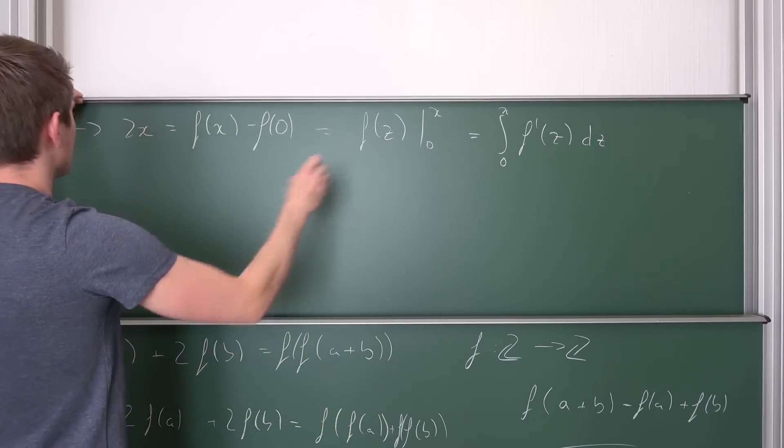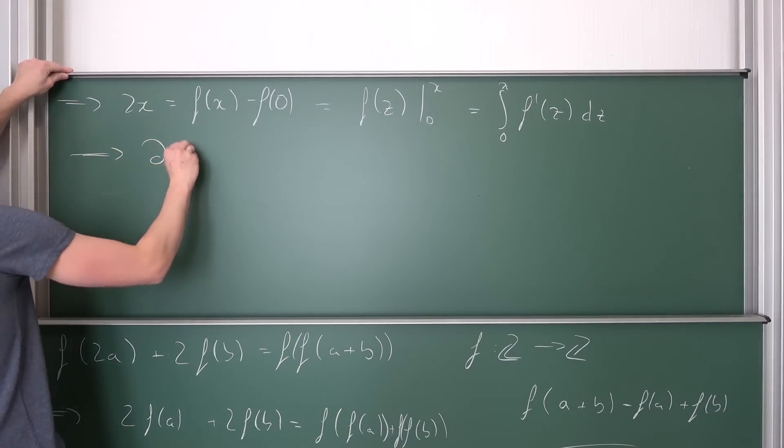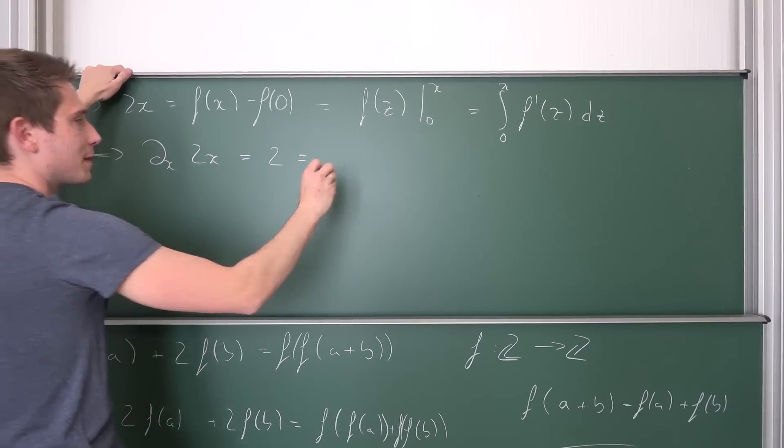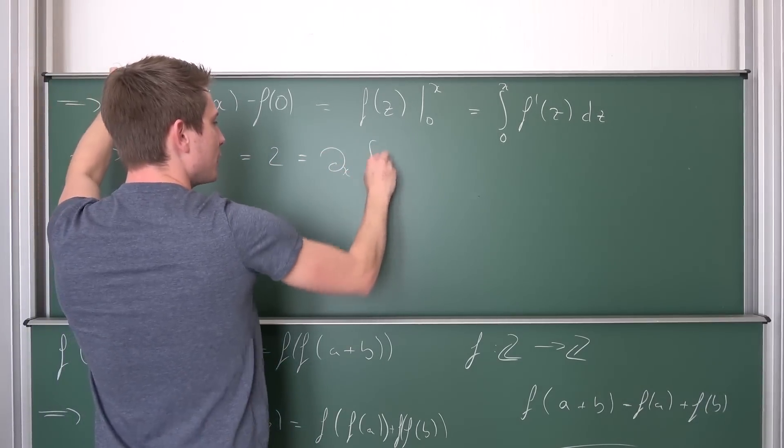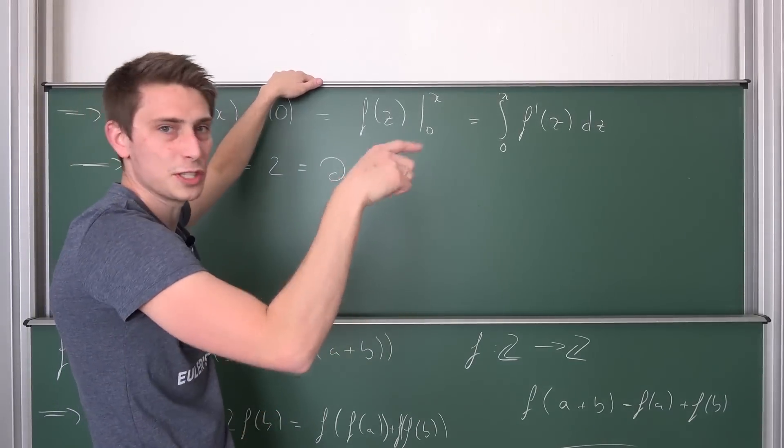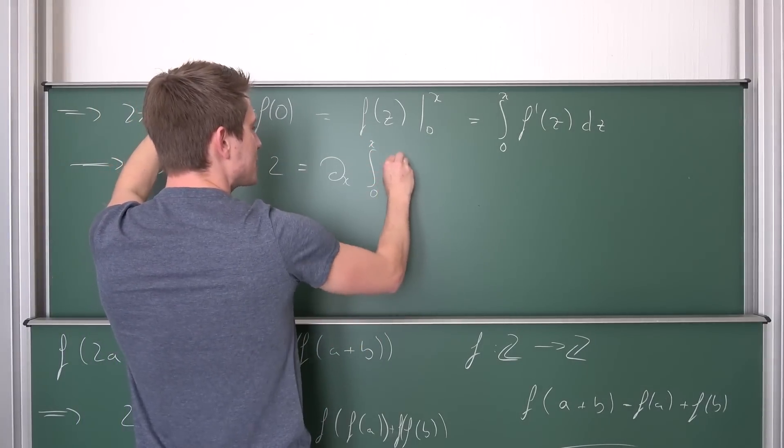Now we are going to take the derivative with respect to x on both sides. This is going to give us 2. By the fundamental theorem of calculus, this is just a regular derivative in one dimension. I just don't want to write out d/dx. This is just weird. So from zero to x, f'(z) dz.